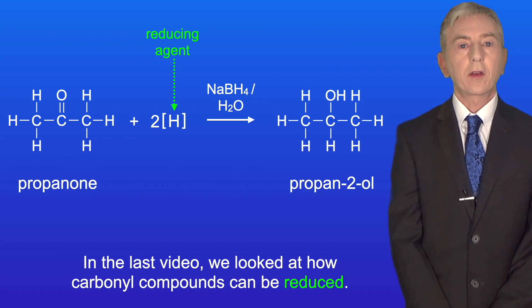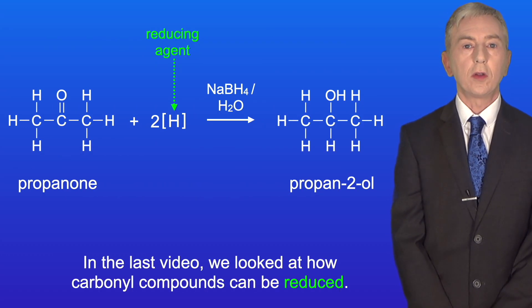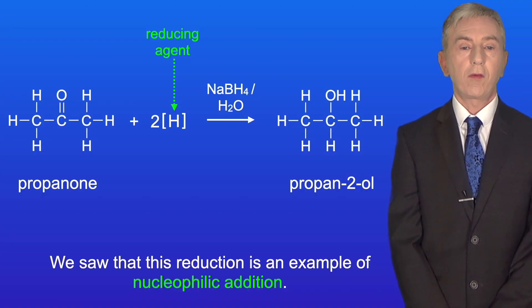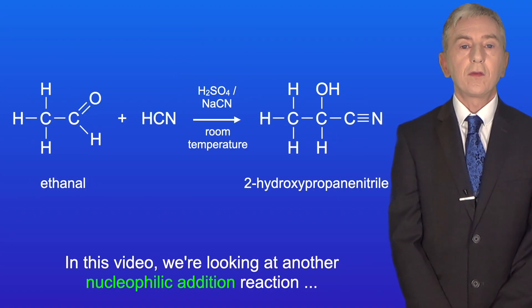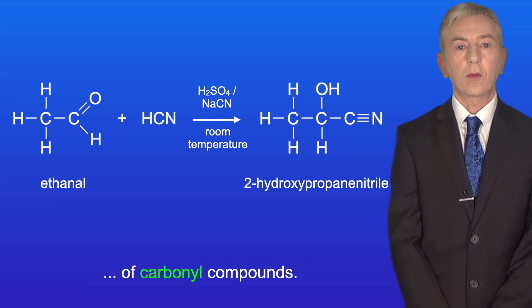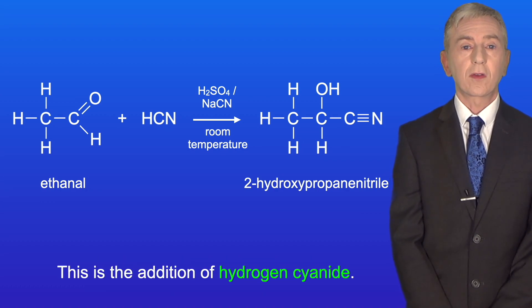In the last video we looked at how carbonyl compounds can be reduced and we saw that this reduction is an example of nucleophilic addition. In this video we're looking at another nucleophilic addition reaction of carbonyl compounds. This is the addition of hydrogen cyanide.